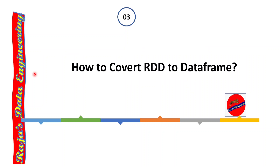Moving on to the next question: how to convert RDD to a data frame? This is a simple and basic question mainly asked for junior developers. In order to convert an RDD into a data frame, we use the simple function toDF(). For example, df = rdd1.toDF(). In case someone has hands-on experience in PySpark, they can answer this easily, and interviewers use this to check real hands-on experience.